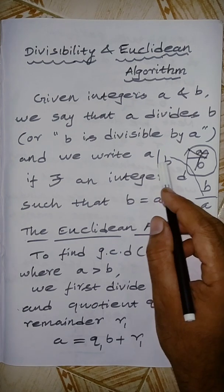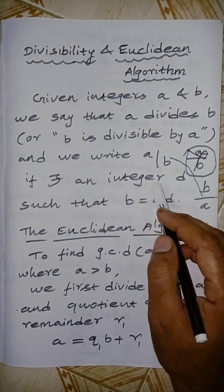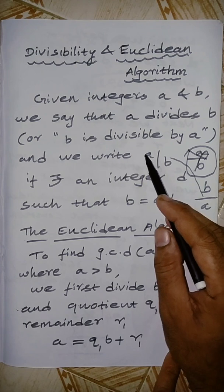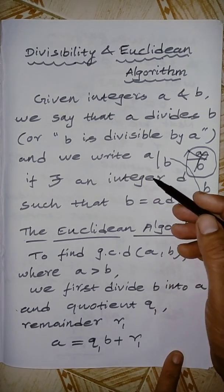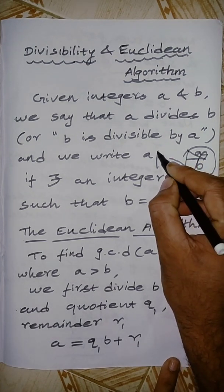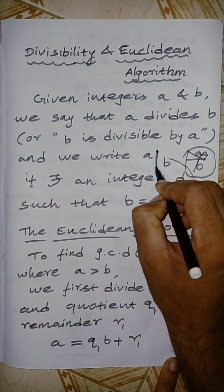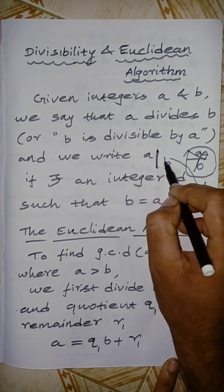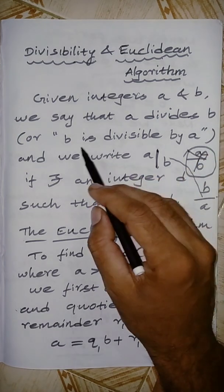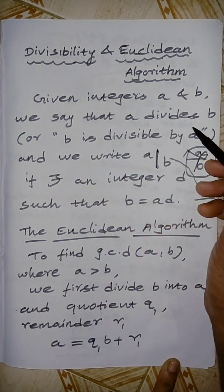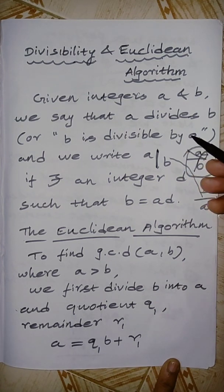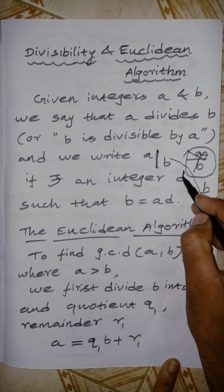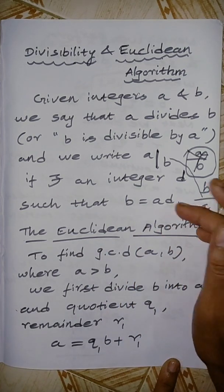We read a | b as 'a divides b,' which means b is divisible by a. The formal definition: a divides b if there exists an integer d such that b equals a times d.